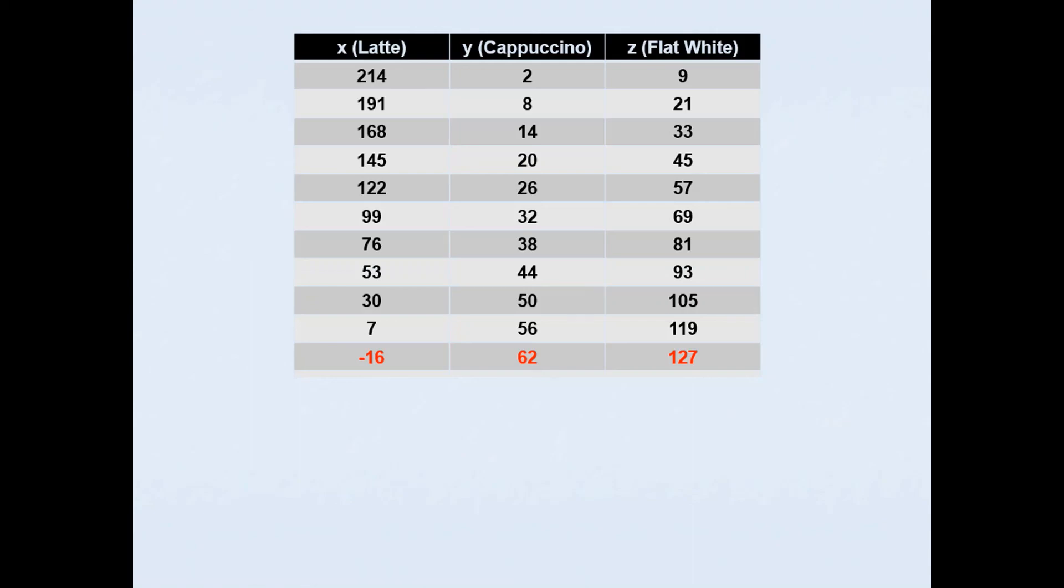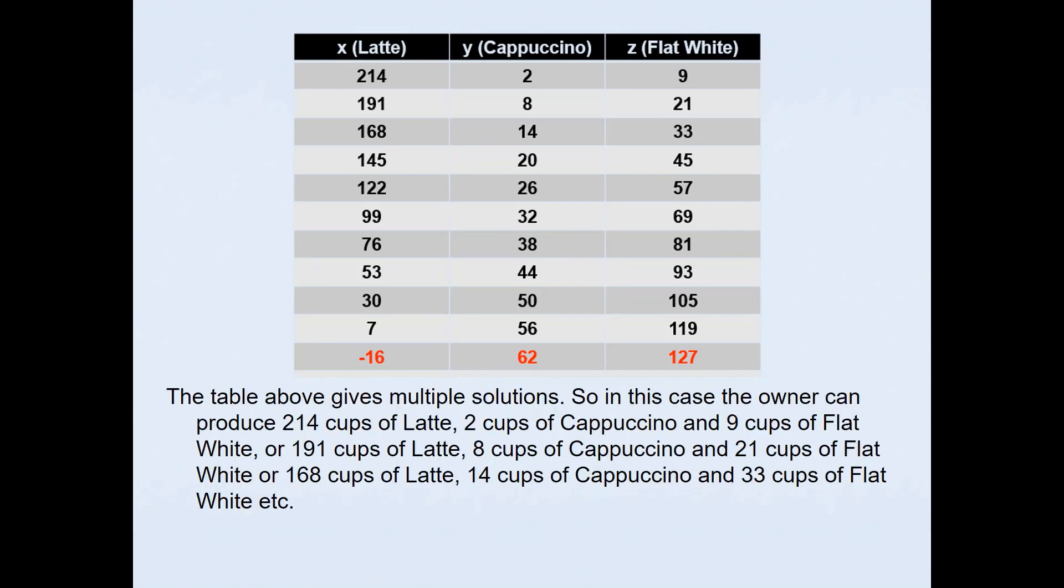For your actual assessment, to get excellence, you must interpret these solutions in context. The table above gives multiple solutions. The owner can produce 214 cups of latte, 2 cups of cappuccino and 9 cups of flat white. Or he can produce 191 cups of latte, 8 cups of cappuccino and 21 cups of flat white. Or 168 cups of latte, 14 cups of cappuccino and 33 cups of flat white, etc. In this context, solutions must be both positive and integers.